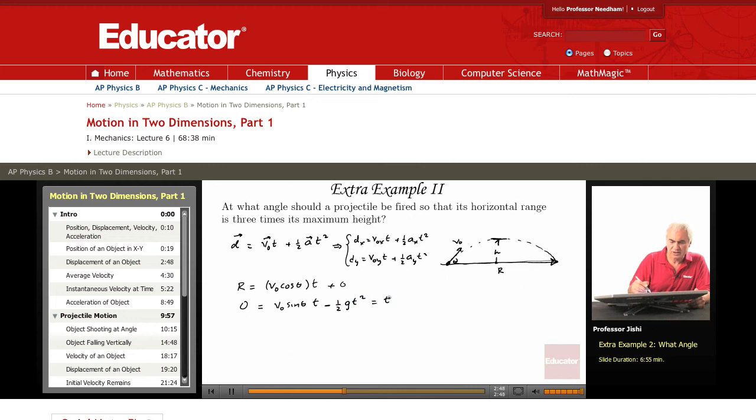So I take T as a common factor: T times V0 sine theta minus half G T. I can find the time now. Since T cannot be 0, this must be 0. So this means that the time is 2V0 sine theta over G.